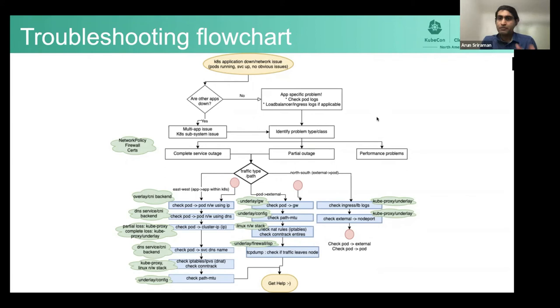So the bubbles that I've put there is where the problem class could lie, which component, and the blue boxes are the ones that you would probably do manually to figure out if that's exactly the problem. And going down, you would then look at pod-to-service DNS name.